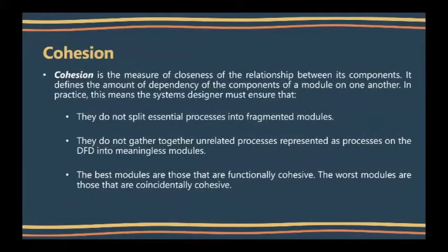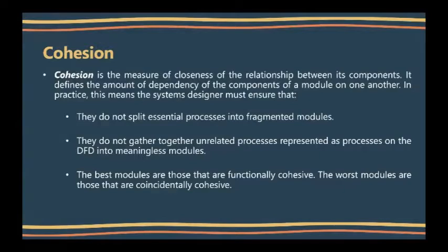Next, let us define cohesion. Cohesion is the measure of closeness of the relationship between its components. It defines the amount of dependency of the components of a module on one another. In practice, the systems designer must ensure that they do not split essential processes into fragmented modules, and do not gather together unrelated processes into meaningless modules. The best modules are those that are functionally cohesive; the worst are those that are coincidentally cohesive.